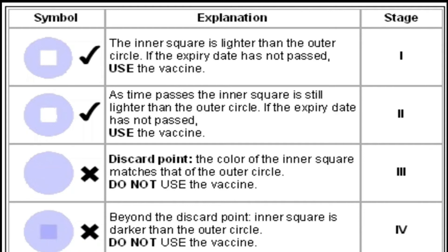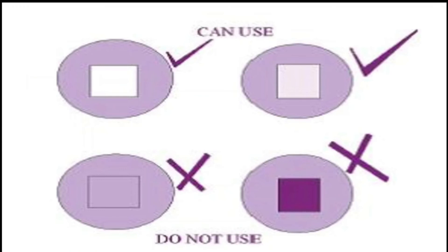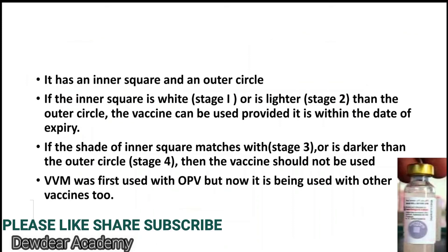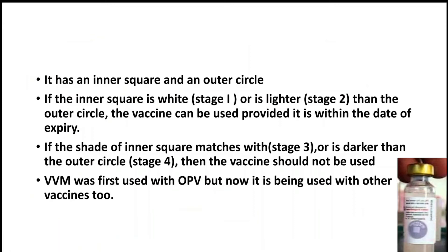Stage 4 is beyond the discard point, meaning the inner square is darker than the outer circle, and the vaccine should not be used. So at stages 3 and 4, the vaccine should not be used. At stages 1 and 2, the inner square is white or lighter, so the vaccine can be used. But if the inner square color matches or exceeds the outer circle color, the vaccine should not be used.